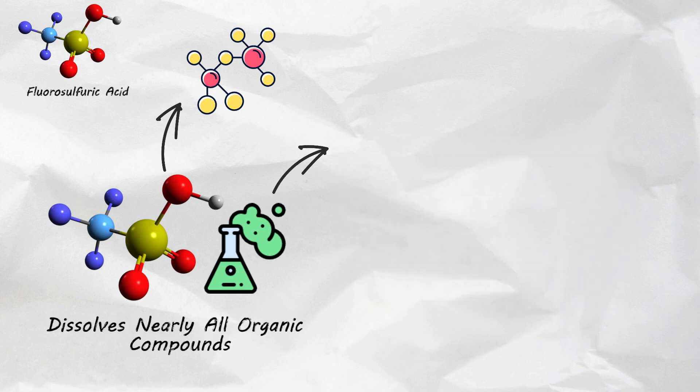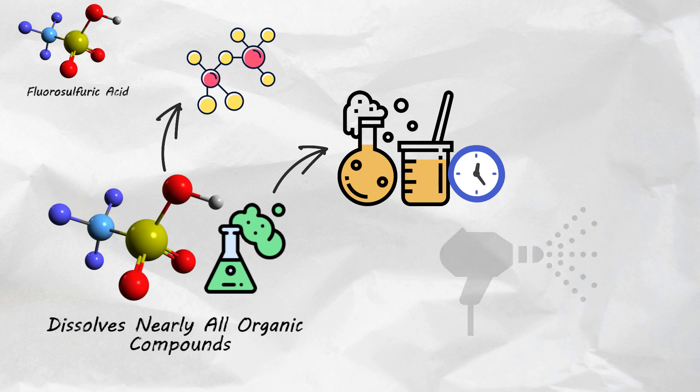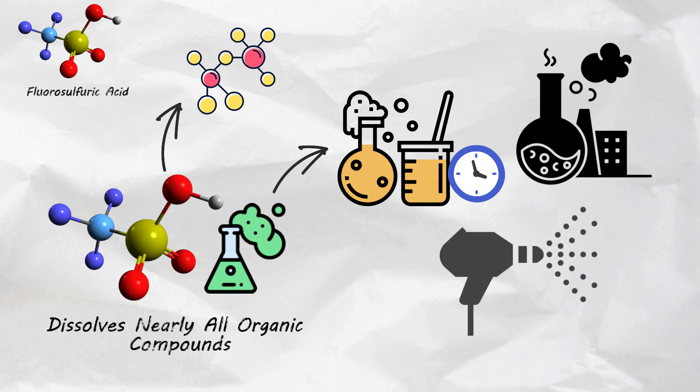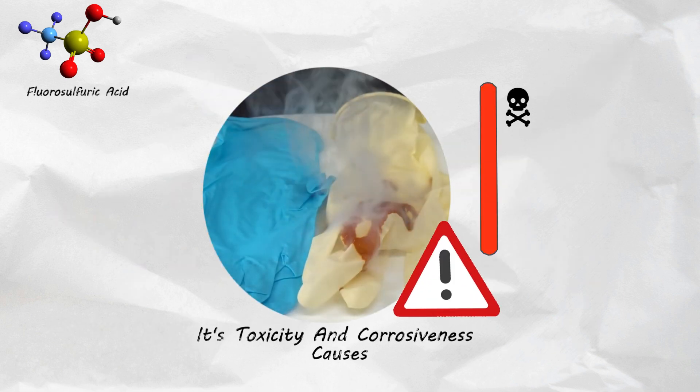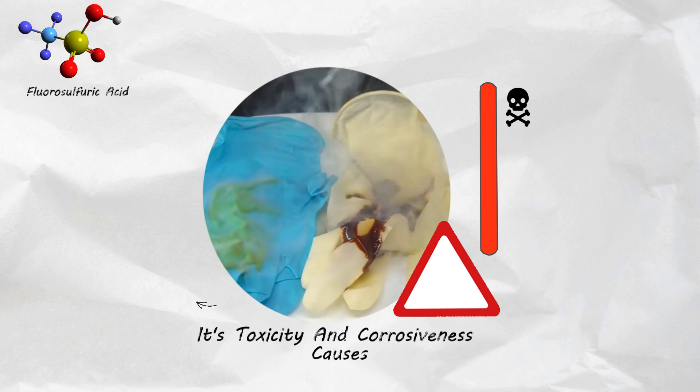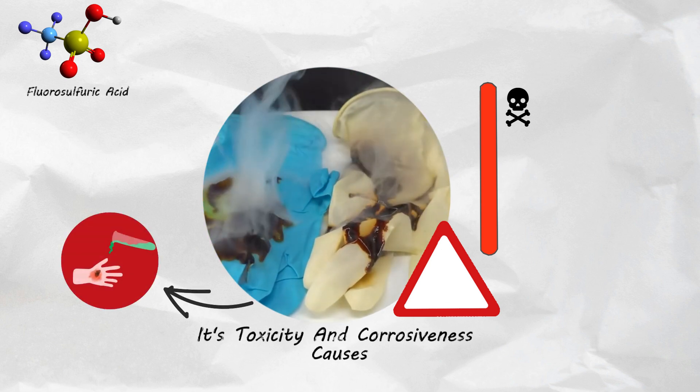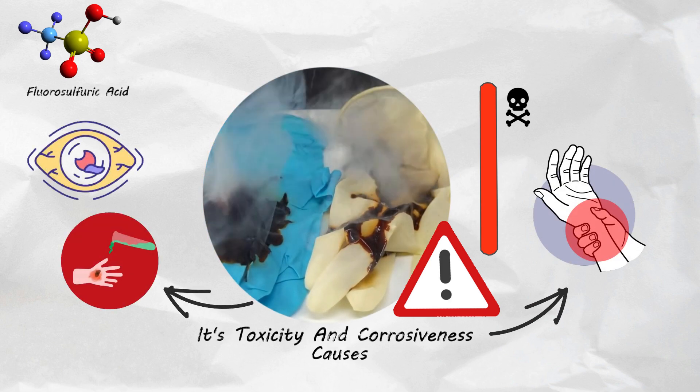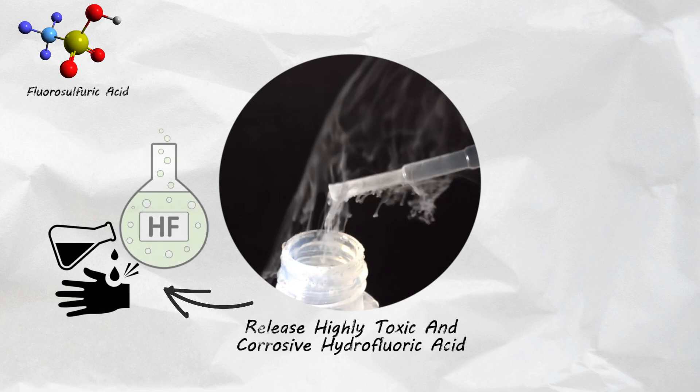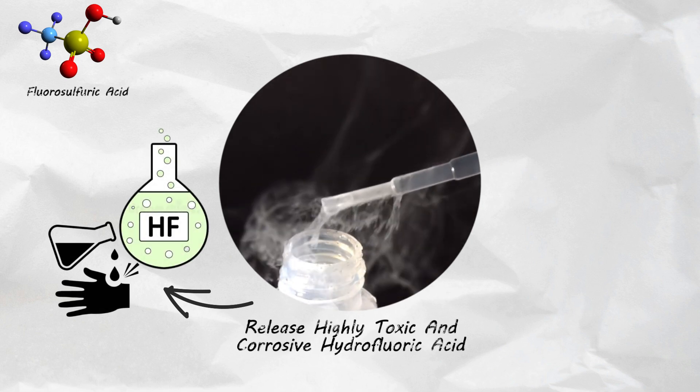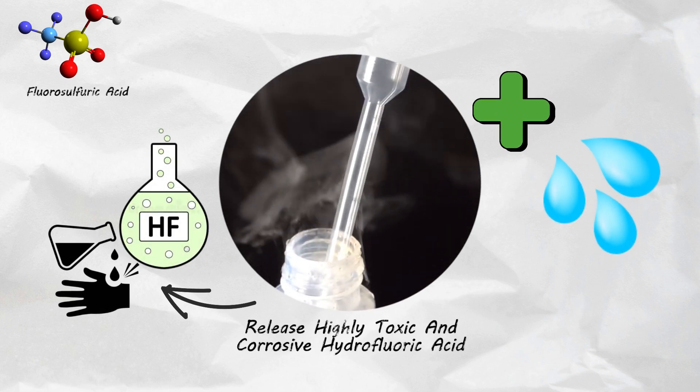In industry, the acid is used to speed up chemical reactions, coat metal objects, and produce a wide range of substances for various industries. But this acid is extremely dangerous. Its toxicity and corrosiveness causes intense burns, eye damage and pain with even brief contact or exposure to its fumes. Fluorosulfuric acid can also release the highly toxic and corrosive hydrofluoric acid when it comes into contact with water.